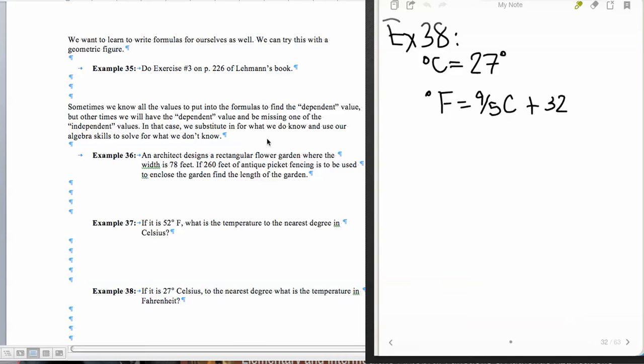Okay, sections 4.6 continued. We're doing example number 38 here at the bottom. If it is 27 degrees Celsius to the nearest degree, what is the temperature in Fahrenheit? So I've already placed in here the degrees Celsius, and I've given us our formula for degrees Fahrenheit for converting Celsius to Fahrenheit.